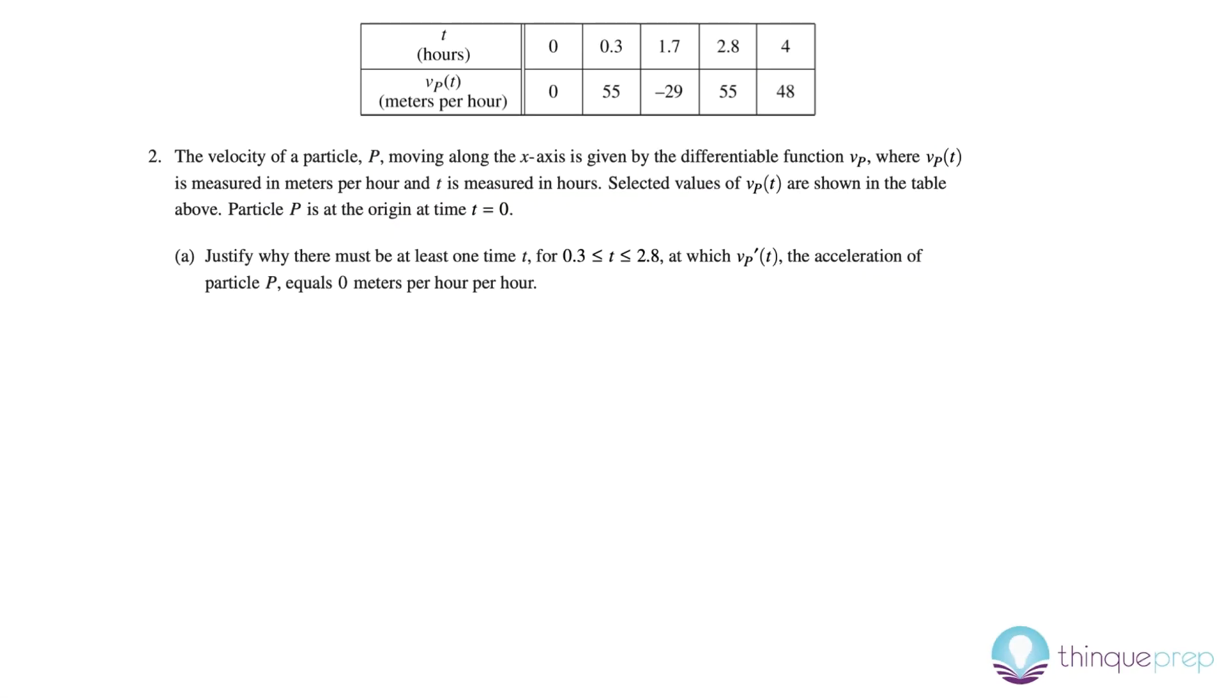So here in question 2 we're asked to justify why there must be at least one time t between the intervals 0.3 and 2.8 at which v'(t), the acceleration of the particle, equals 0 meters per hour per hour. So whenever I'm asked to justify something, I think of one of three theorems that I can use on this test.